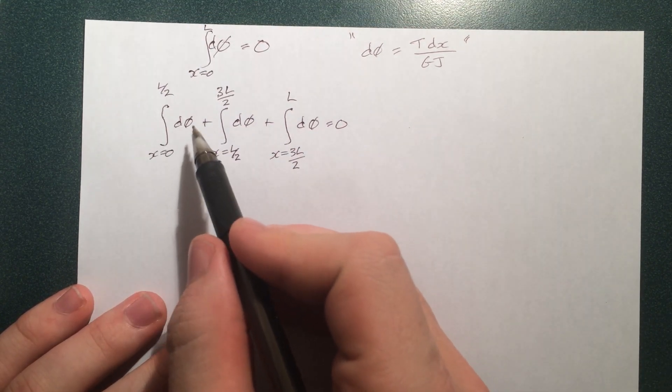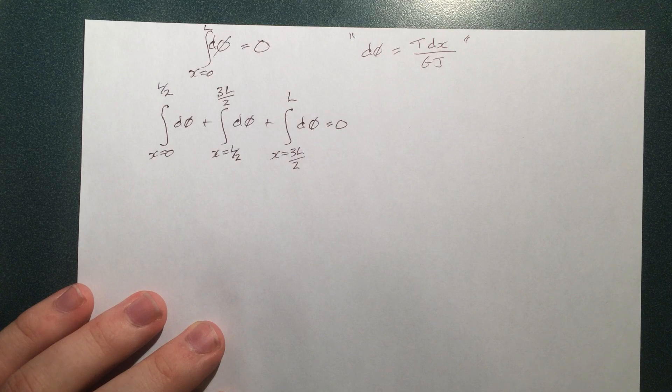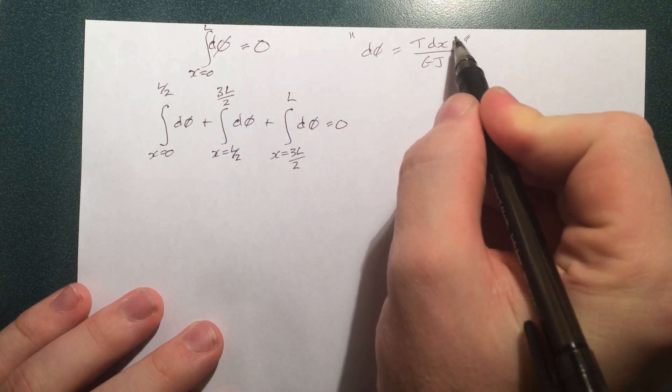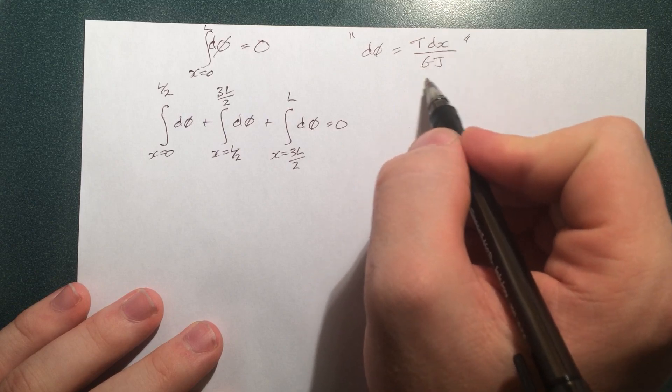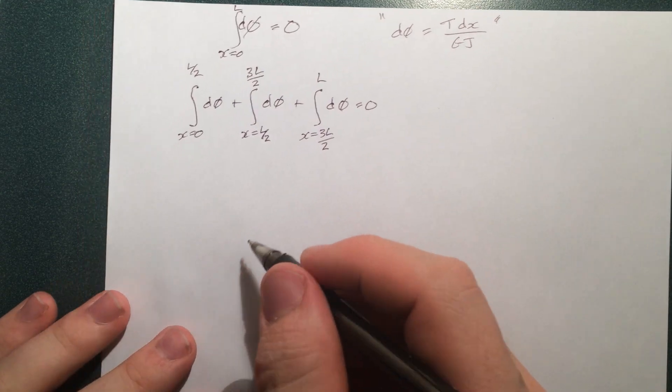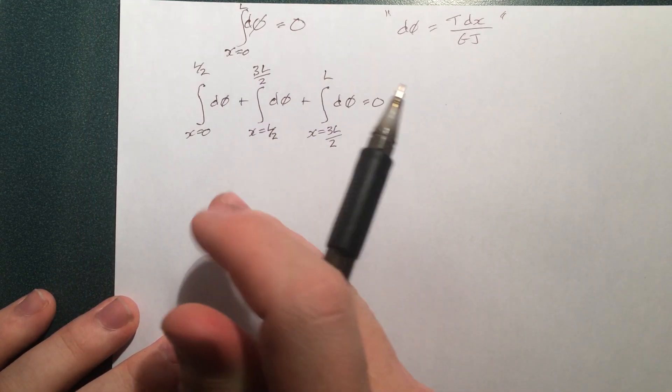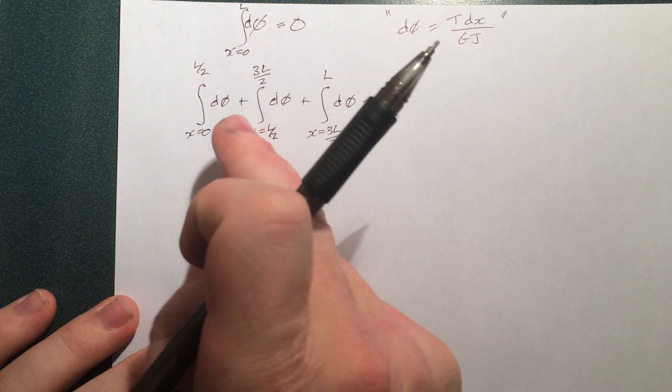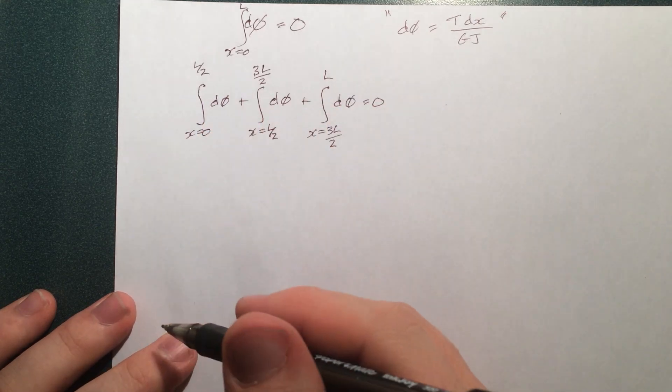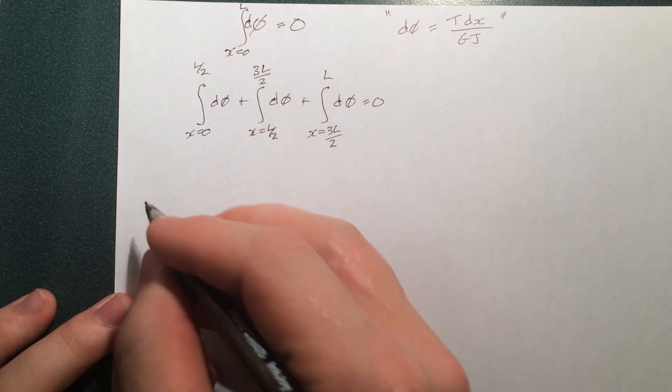So we know that the twist in that first section can be described by this piece and the components of the first section, or the properties of the first section. So we're going to rewrite this integral as replacing each of these dphis by t dx over GJ, but of course, each one having its own specific properties.